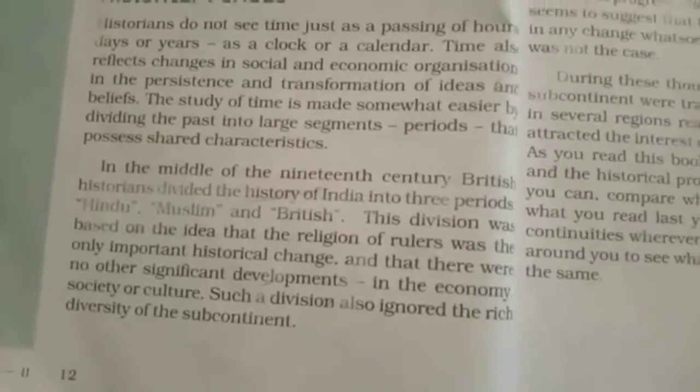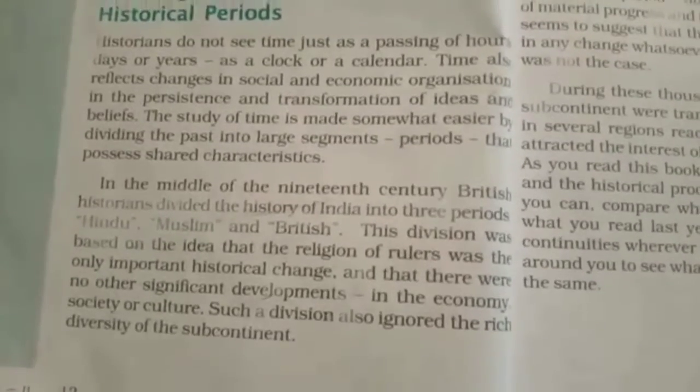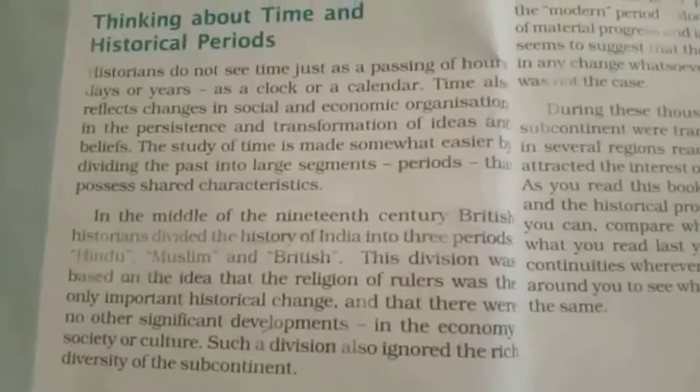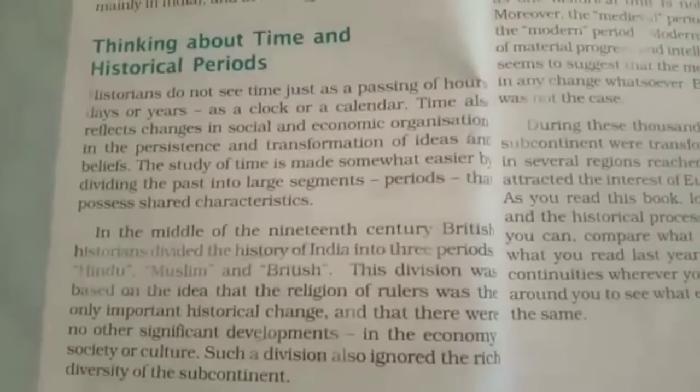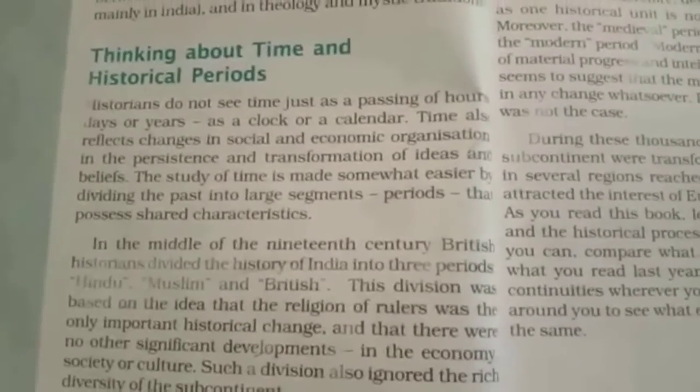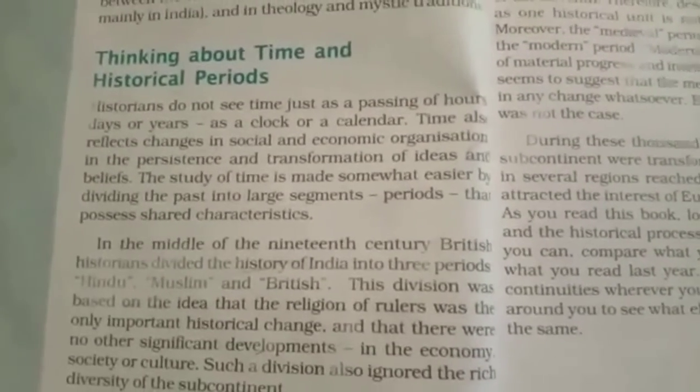In the middle of the 19th century, British historians divided Indian history into three periods: Hindu, Muslim and British. But this division given by British historians is not accurate, because during each of these periods other religions also existed in India.